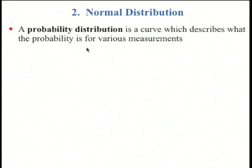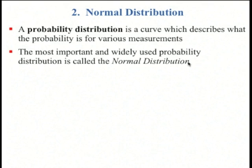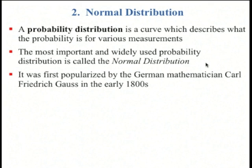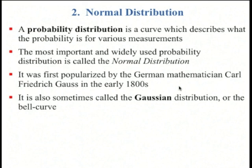A probability distribution is a curve which describes what the probability is for various measurements. The most important one that we will use in this course is called the normal distribution. This was first written down by Carl Friedrich Gauss in the early 1800s, and so sometimes it's called the Gaussian, and a lot of people call it the bell curve.